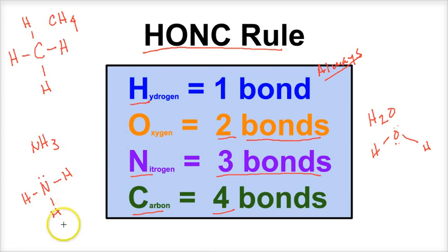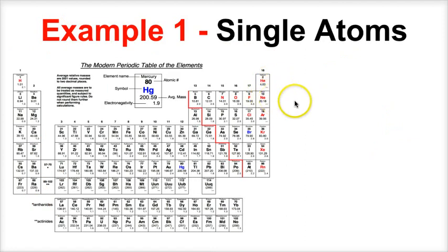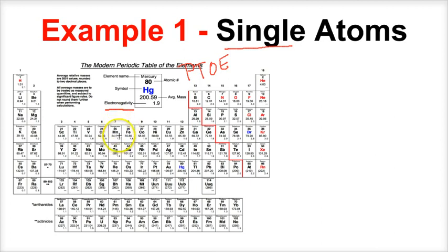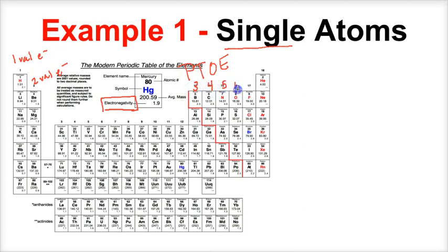Now let's apply these rules to several different Lewis structures. When drawing Lewis structures, you'll need your periodic table of elements — specifically one that includes electronegativity values. Group 1 elements have one valence electron, group 2 have two, group 13 have three, and continuing across: four, five, six, seven. Helium has two valence electrons, and all other noble gases have eight.